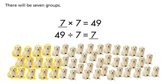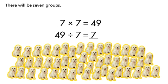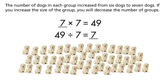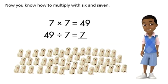There will be seven groups. The number of dogs in each group increased from six dogs to seven dogs. If you increase the size of the group, you will decrease the number of groups. Now you know how to multiply with six and seven.